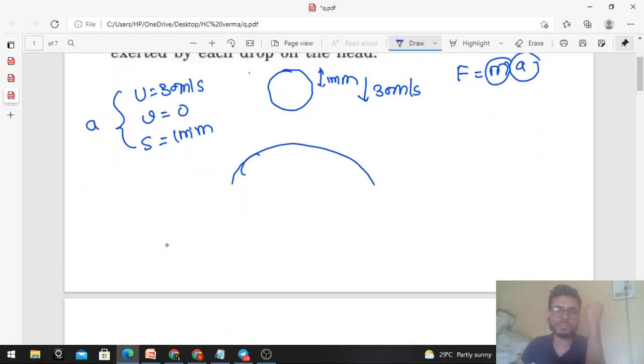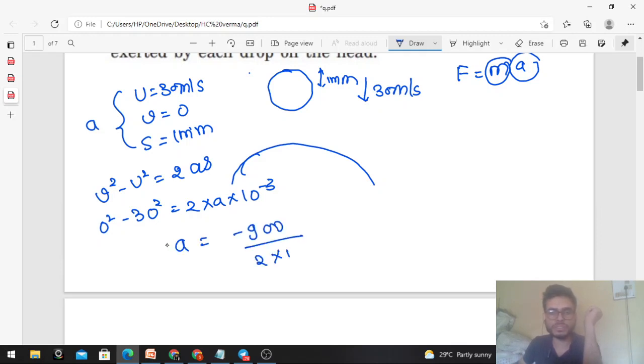Can you find out the acceleration from these three parameters? You can use v² - u² = 2as. The final velocity is 0, minus initial velocity 30, that will be equal to 2 into acceleration into s, which is 1 mm, which is 10⁻³ meter. So acceleration will be -900 divided by 2 × 10⁻³. Calculate it: -4.5 × 10⁵ meter per second squared.